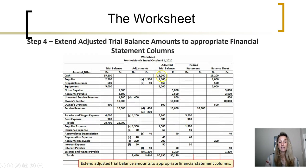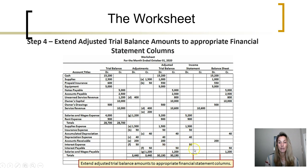The worksheet then takes these adjusted balances and extends them over to whichever set of columns corresponds to the financial statement those account balances are reported on. Assets such as cash, supplies, prepaid insurance, and equipment; liabilities such as notes payable, accounts payable, and unearned service revenue; and owner's capital all end up on the balance sheet. Revenues and expenses are all reported on the income statement. Accumulated depreciation, interest payable, and salaries and wages payable also go on the balance sheet. These last two column sets simply take the trial balance amounts and place them into the appropriate columns.